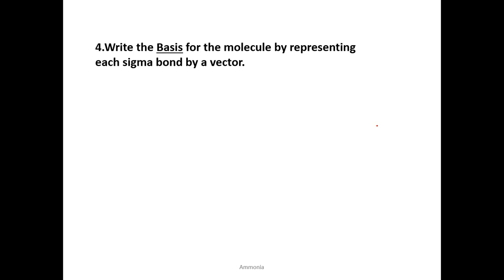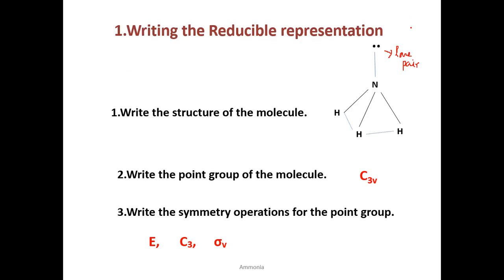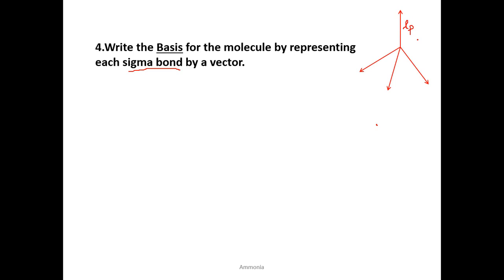Next we have to write the basis for the molecule, by representing each sigma bond by a vector. In NH3 you have three bonds, so there will be three vectors. Apart from that, the fourth vector will represent the lone pair. We have shown the lone pair in the structure of ammonia. So there are four vectors in the basis. Now we have to perform the symmetry operations on this basis.